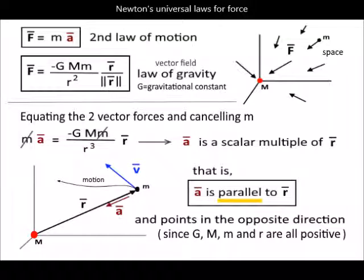Here we have two laws for force. The first is Newton's second law of motion: force equals mass times acceleration. The second is Newton's law of gravity expressed as a vector field. A picture of the gravitational vector field is shown in space. The vector field is radial with respect to the origin, and the magnitude of the gravitational force between masses is inversely proportional to the square of the distance between the masses.